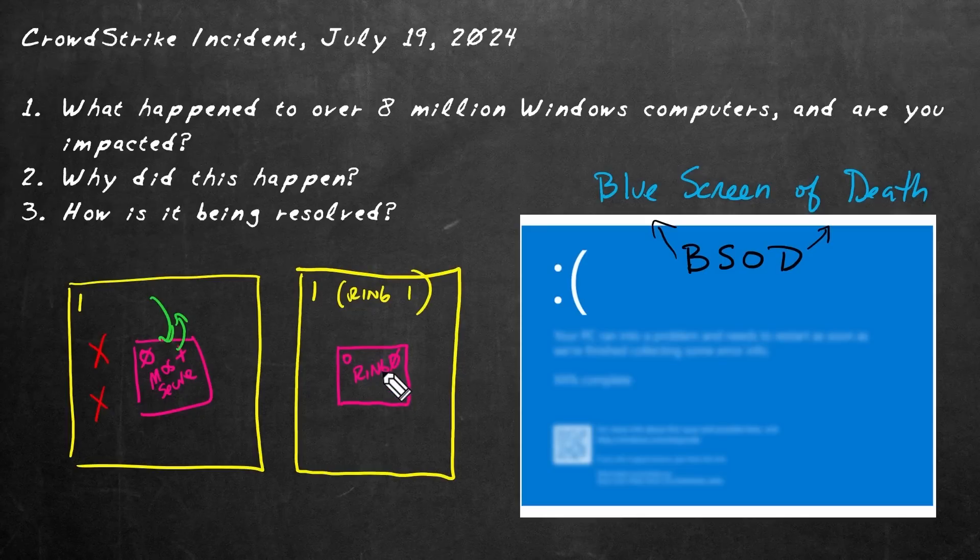And here at ring zero, the operating system is handling core functions for the operating system itself. When we have other applications, such as Microsoft office applications or other programs or browsers that we're running, they're running in ring one. It's also referred to as user mode. These little red boxes are applications, user applications running in ring one. For those applications to work, they need resources like memory, disk, or network. When those apps need resources, they're making requests to the ring zero components.